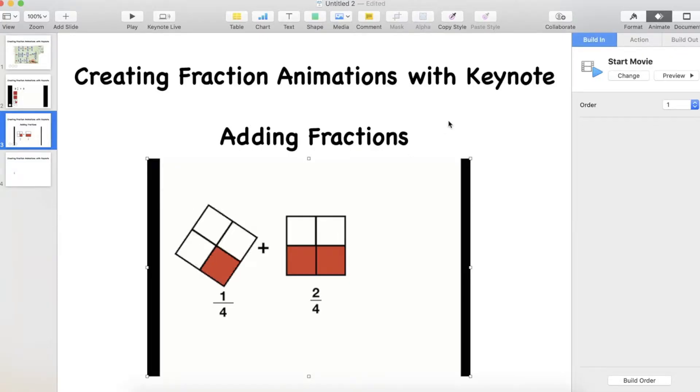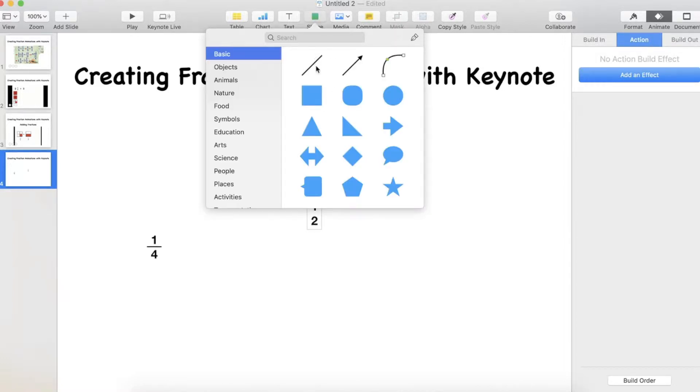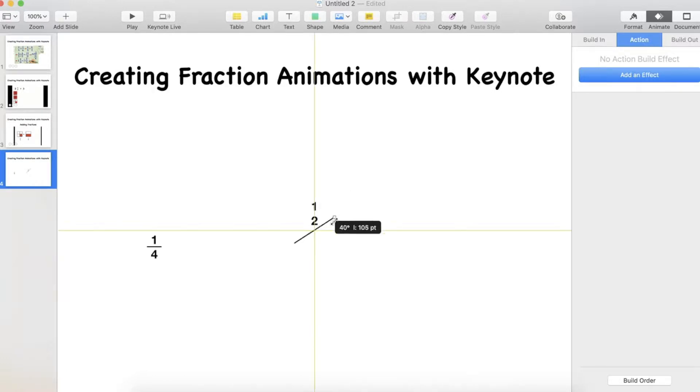Creating fraction animations when we're adding fractions. This is probably the simplest one. What we need to do first of all is actually make our fractions. So I use a text box and write down my fractions, say 1 over 2 or a half. Then I use the shape tool to add a line which will be our vinculum. Now vinculum is the fancy maths word for the line between the numerator and the denominator.